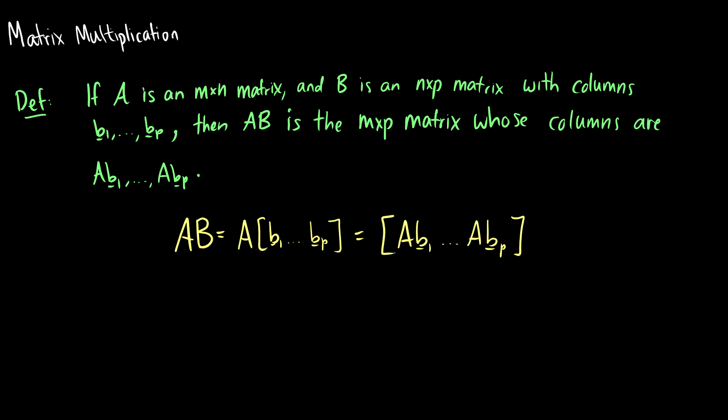Today I'll introduce matrix multiplication. This is a little bit different from adding and scaling matrices. If A is an m by n matrix and B is an n by p matrix with columns b1 through bp, then AB is going to be m by p, whose columns are Ab1 all the way through Abp.